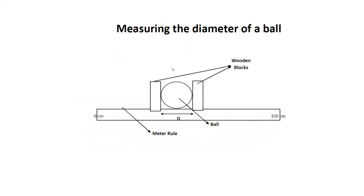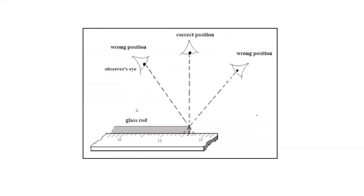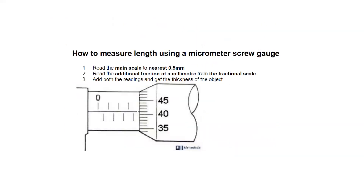When using a ruler, you should avoid a parallax error by always looking perpendicular. The same applies when using a micrometer. The formula for the micrometer is: main scale plus circular scale multiplied by 0.01 millimeter.